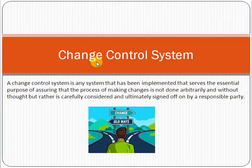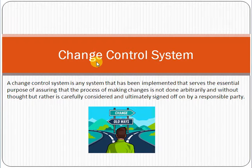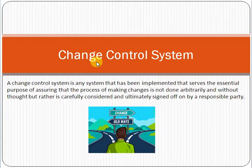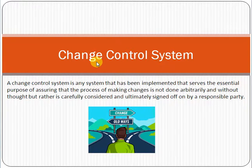Because implementing something at production means the customer will start using it, you need a procedure and mechanism through which that change goes to the production system. Some authorities and sign-offs will be required. Once the authorities approve that the change is okay — that quality assurance is complete, it is properly tested and verified by the user — then we implement the change at production.